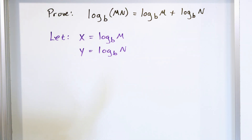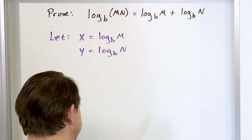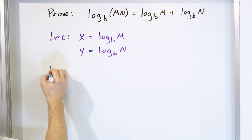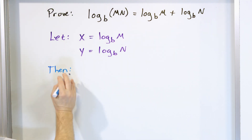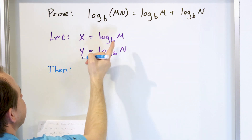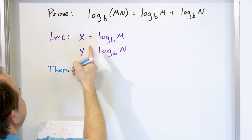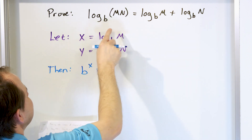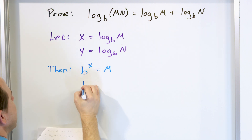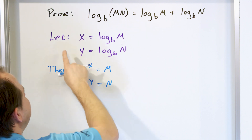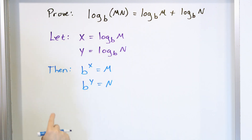The rest of it, I'm going to try to logically connect the dots. If I let those things be true, then the following things are also true because of the definition of a logarithm. From the first line, b to the power of x equals m, and b to the power of y equals n. So because of what I let these variables equal, these exponential equations are also true.